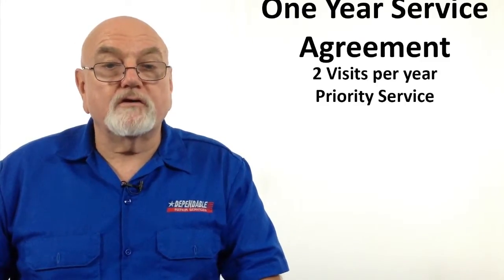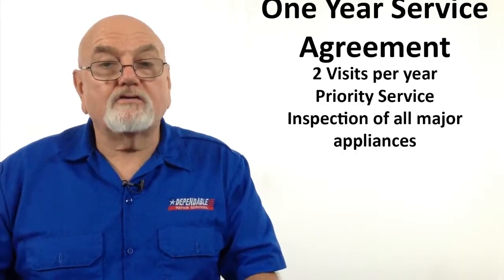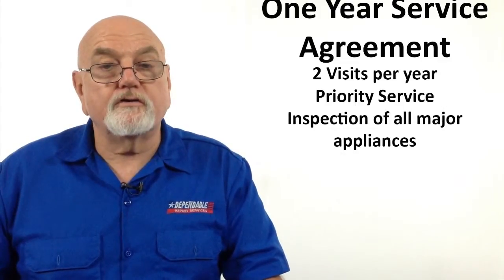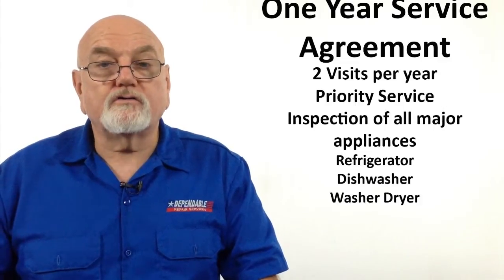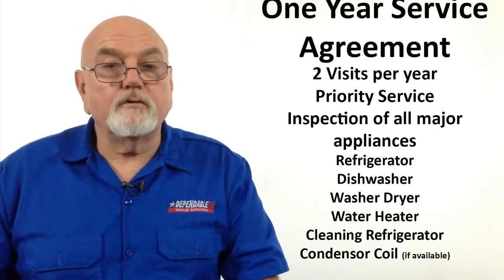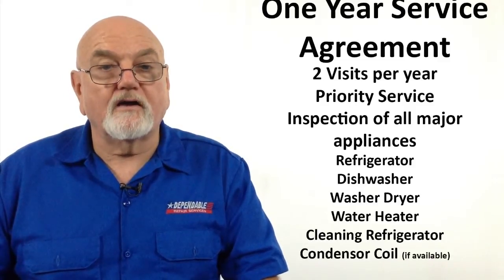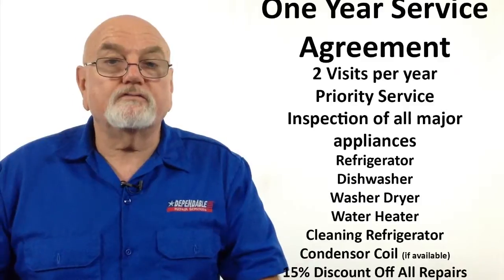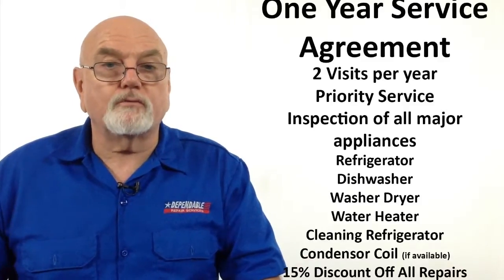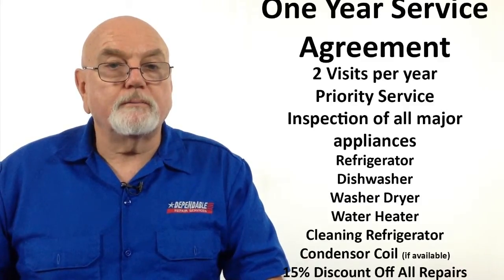It includes priority service if repairs are needed, an inspection of all your appliances including your refrigerator, your dishwasher, your washer, your dryer, and your water heater, and cleaning the refrigerator condenser coil if accessible. It also includes a 15% discount off all products we repair during your service agreement period.